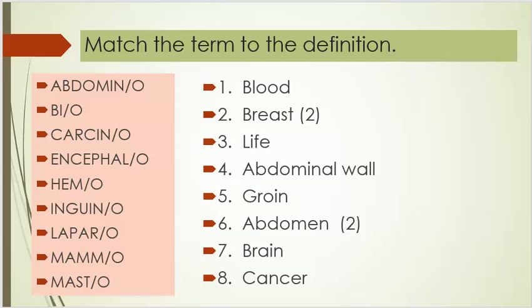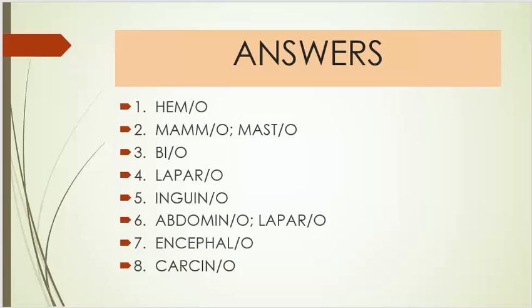Number seven, brain. Number eight, cancer. Answers: Number seven is encephalo, and number eight is carcino.